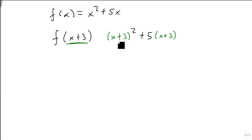And so this is a perfect square trinomial. So we're going to get x squared plus 2 times 3 times x plus 3 squared. And then we're going to add 5 times x plus 3.